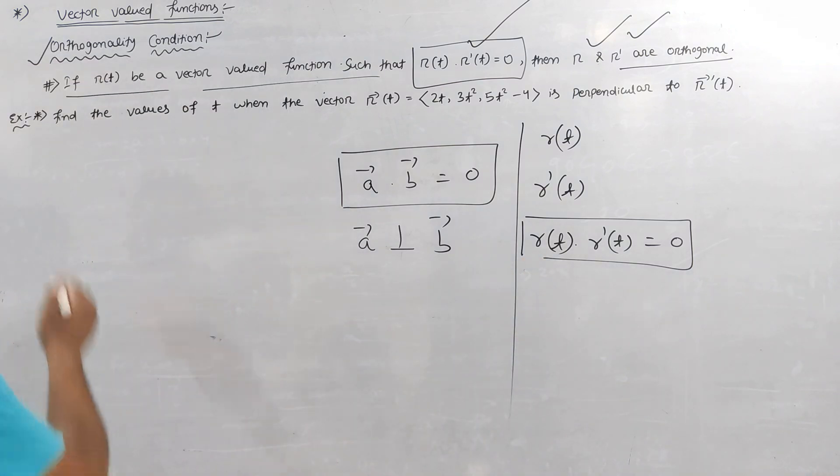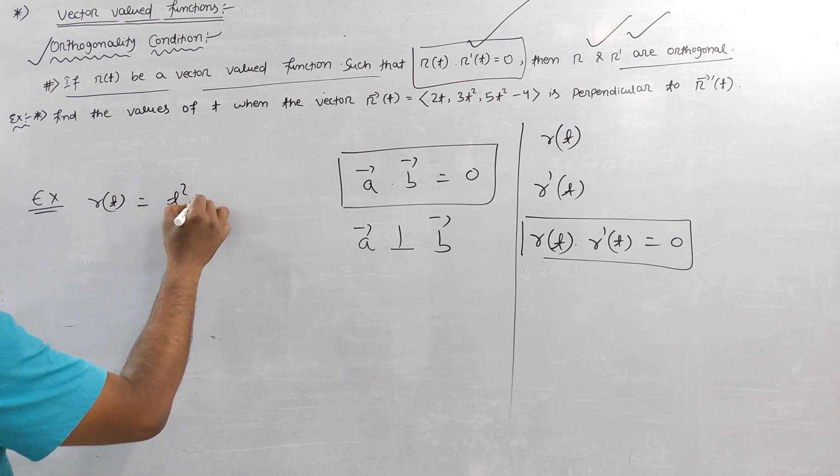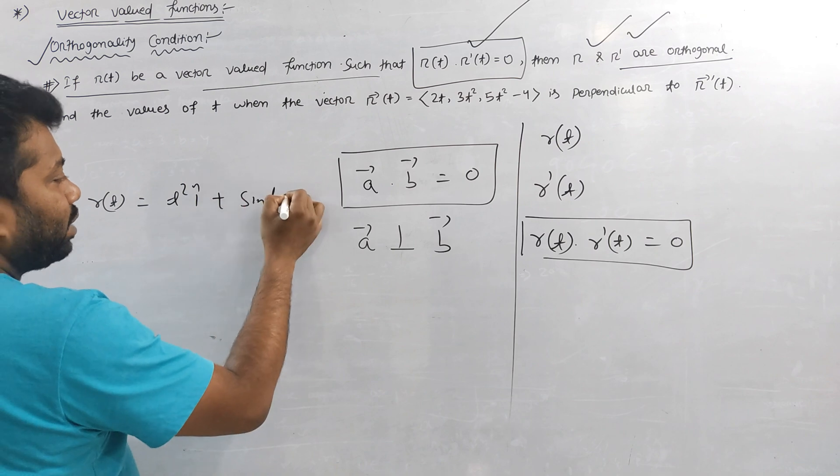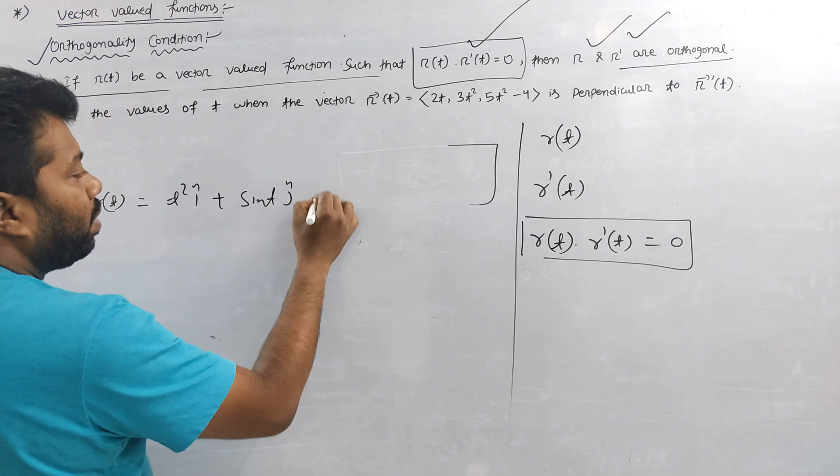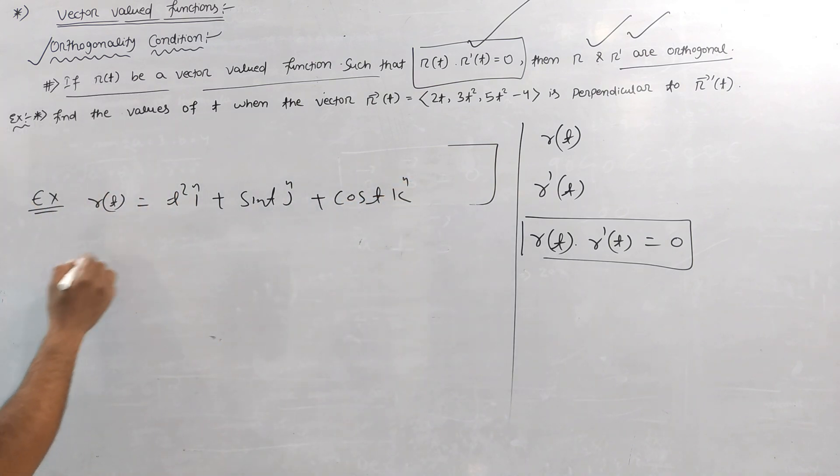So let me show you some examples. For example, we will show you some examples from t square i plus sine t j plus cosine t k. The square of t, this means that R dash t find it.